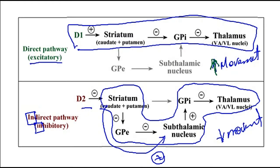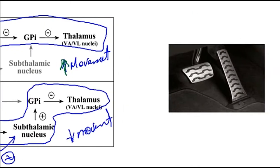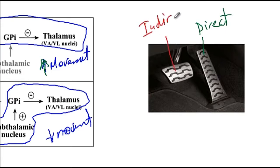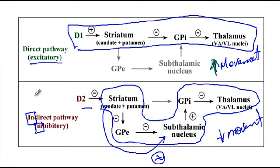A helpful analogy: the direct pathway is like the gas pedal, while the indirect pathway is like the brake. When the direct pathway is activated, there is increased movement — the car starts to move. When the indirect pathway is activated, it is like pushing the brake and the car stops. So the indirect pathway decreases movement while the direct pathway increases movement.